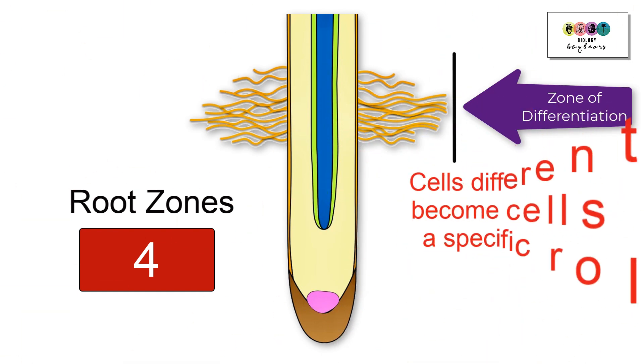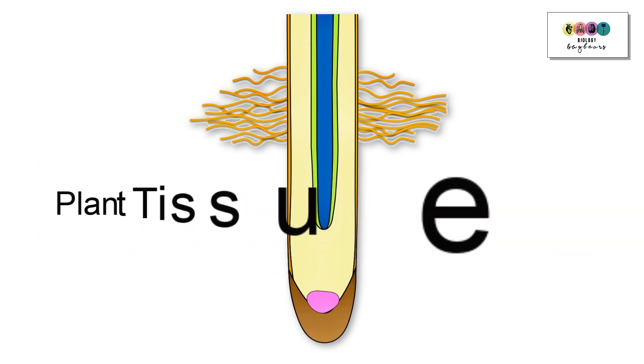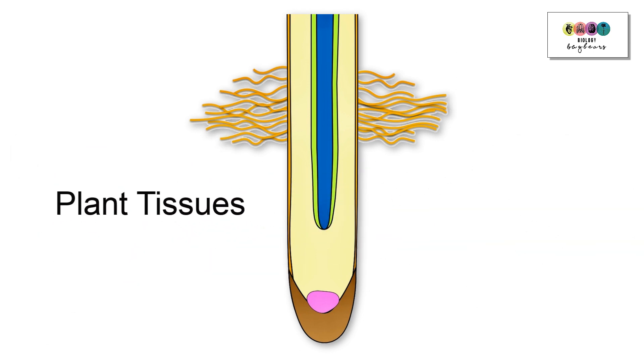And then above this is the zone of differentiation. This is where those newly produced elongated cells will become specialized cells - they'll differentiate. Finally, it's a good idea to be able to mark in on your diagram the plant tissues. Always start at the outside and work your way in: dermal, ground, and vascular tissue.